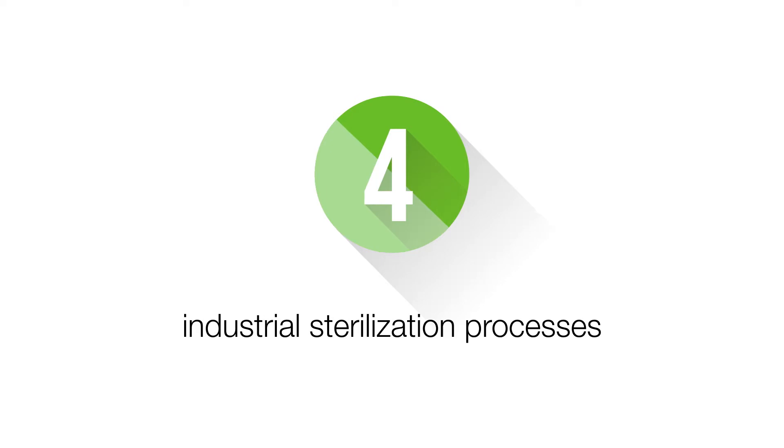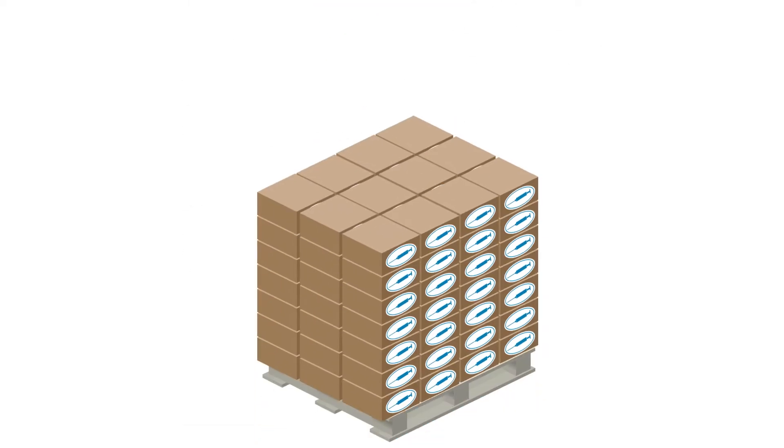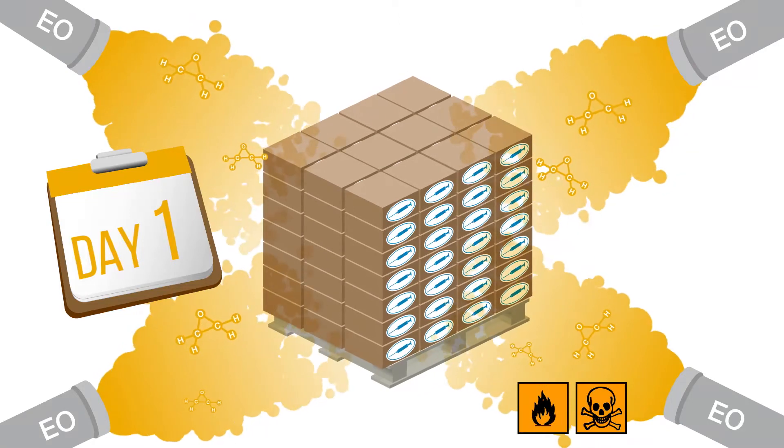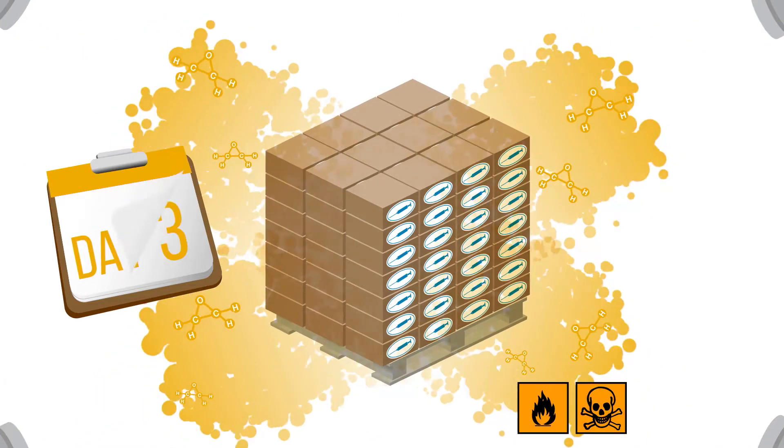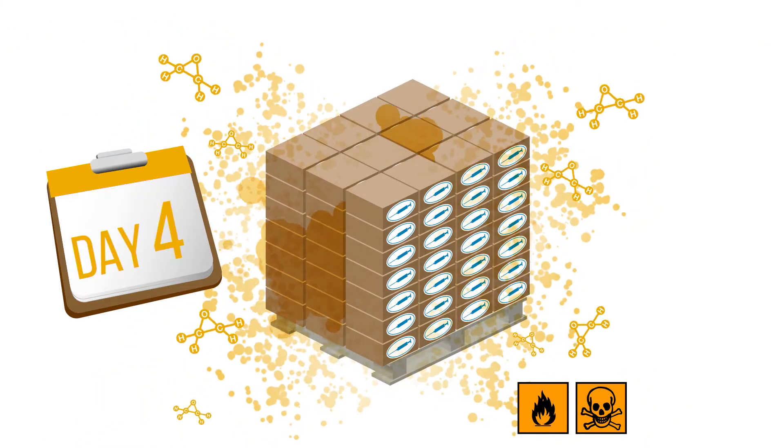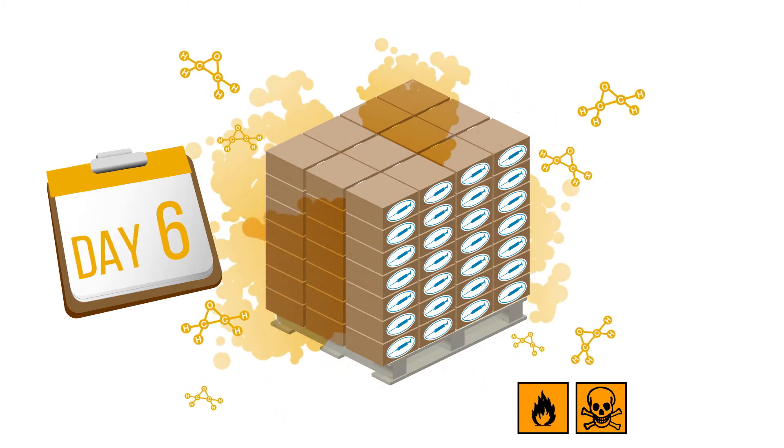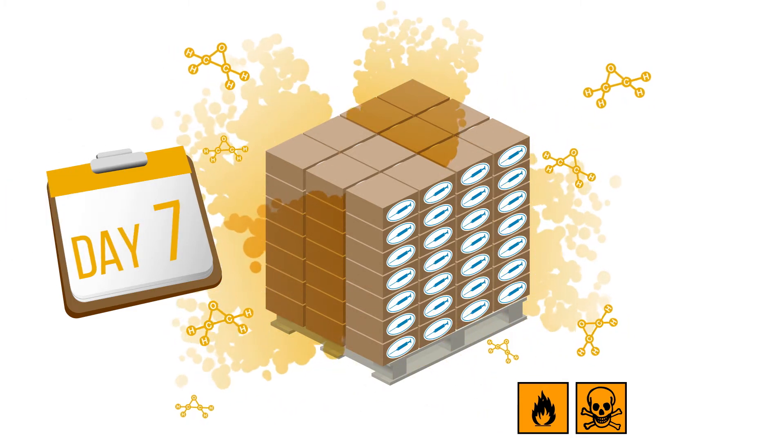There are four different main industrial sterilization processes that are widely used today. Ethylene oxide is a toxic gas used for sterilization. It can cause cancer if inhaled in large quantities. When used, a lengthy degassing period is required before medical devices are safe for release.